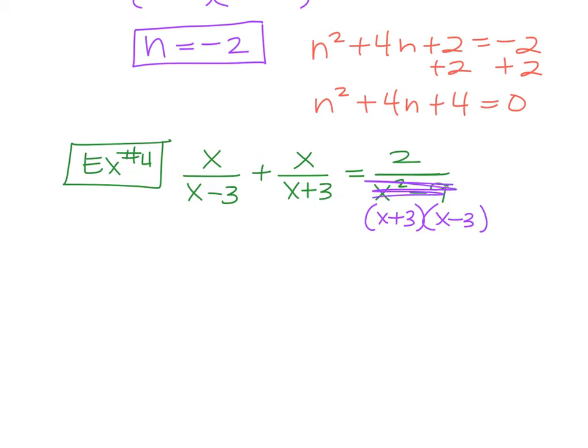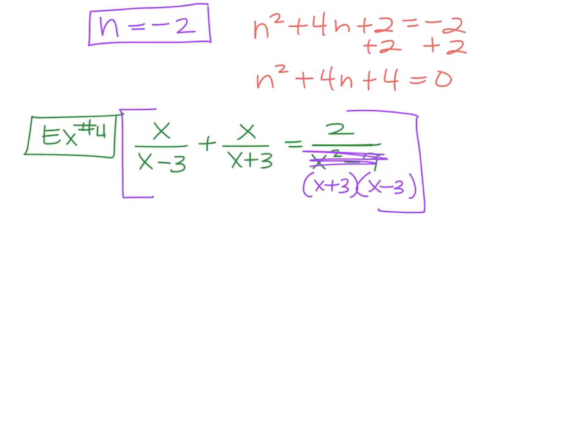So you're going to just get rid of this and drop the x plus 3, x minus 3 in. What's your least common denominator then? x plus 3 times x minus 3. So we're going to take this whole thing and we're going to multiply by x plus 3 times x minus 3.